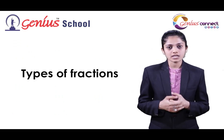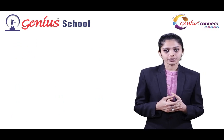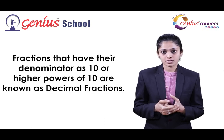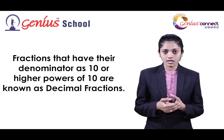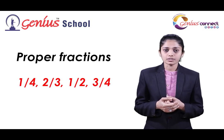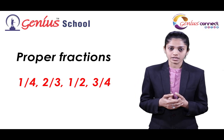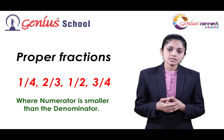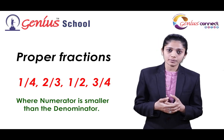Now we will move to various types of fractions. If you eat 9 chocolates out of 10, imagine if you had 100, 1000, or 10,000 chocolates — fractions with a denominator of 10 or higher powers of 10 are known as decimal fractions. The examples we saw — one fourth, two third, one half, three fourth — are examples of proper fractions. Proper fractions are fractions where the numerator is smaller than the denominator.